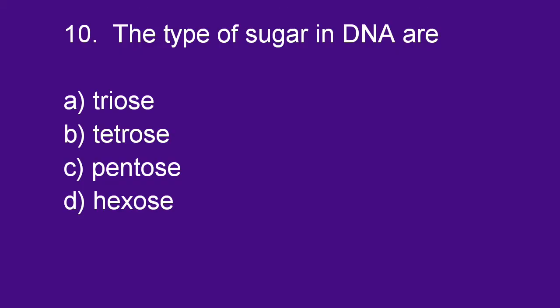Next question: The type of sugar in DNA is pentose. Option C is right.